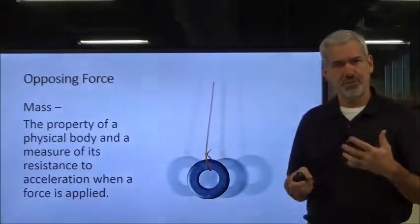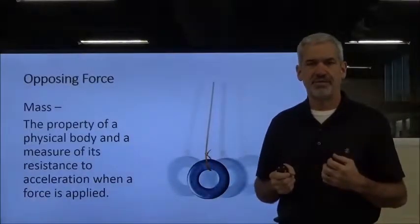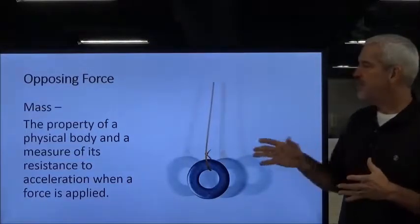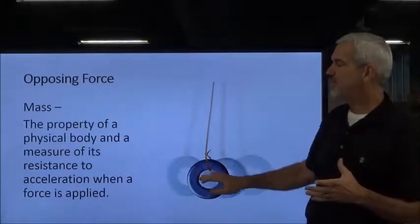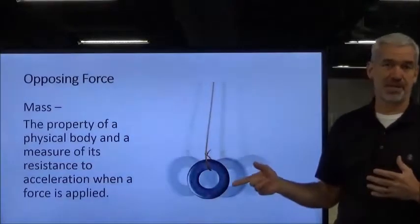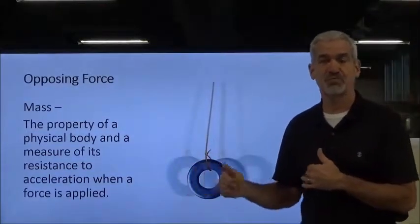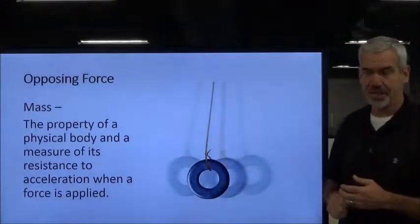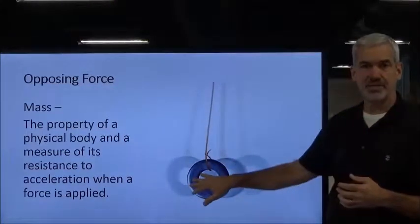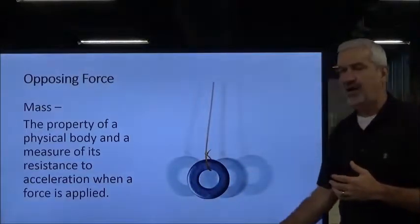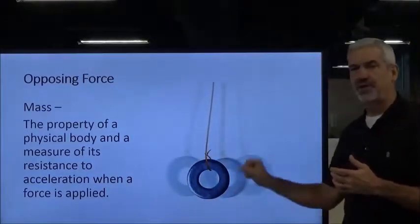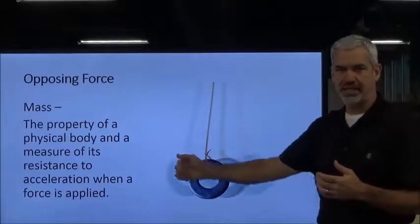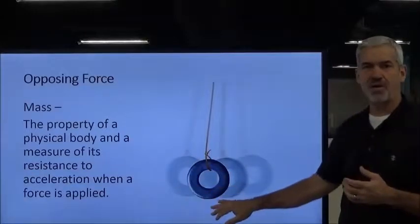The other opposing force is the mass of an object. Mass is the property of a physical body that measures its resistance to acceleration when a force — the excitation force — is applied. In this example I've just got a washer tied to a string. This washer is the mass, and how it responds to my excitation force if I were to thump it and put it into motion — how much it resists that excitation force — is dependent on the mass.